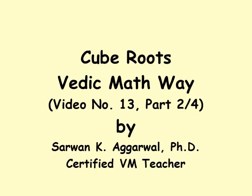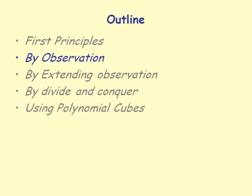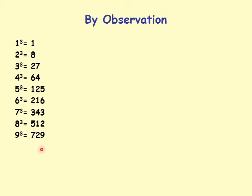Let's continue to the next section. The next section is by observation. Let's see how do we compute a cube root of a perfect cube by using observations. This is my by observation slide. First thing I do is write down my first 9 cubes. 1 cubed is 1, cube of 2 is 8, that of 3 is 27, and so on and so forth. 9 cubed is 729. I did not write 10 cubed is 1000, which is also part of the cubes I need.